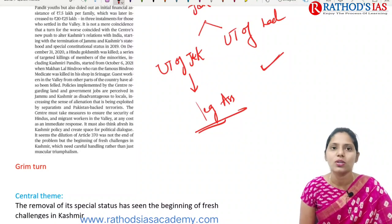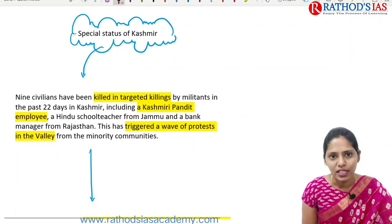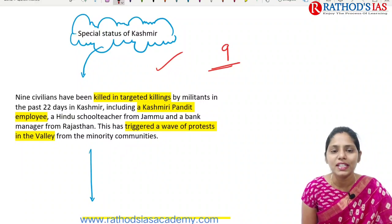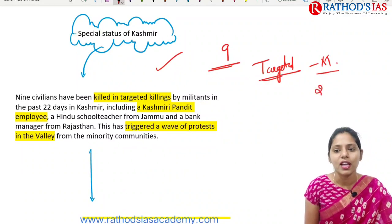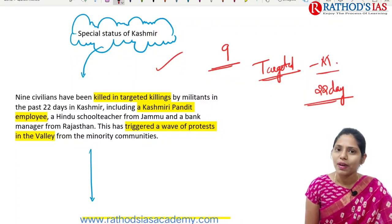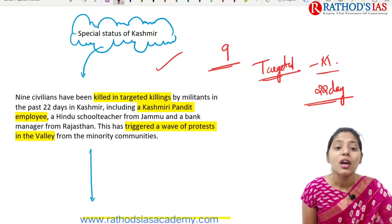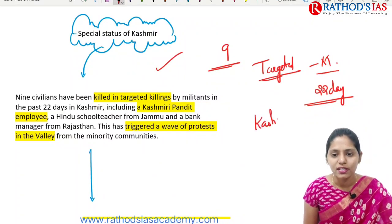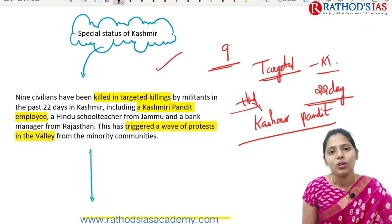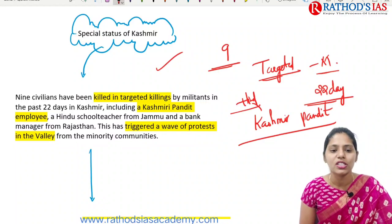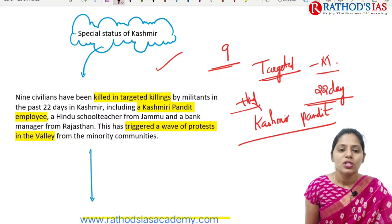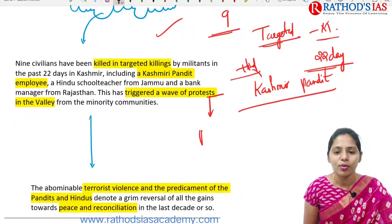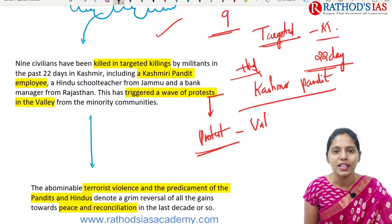There have been wide-ranging protests and violence in the Jammu and Kashmir region. Recently, nine civilians were killed in targeted killings, mainly carried out by militants over the past 22 days in Kashmir. The victims include Kashmiri Pandits employed there, Hindu school teachers from Jammu and Kashmir, and even a bank manager from Rajasthan.